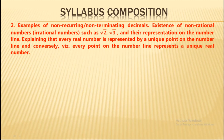Next we will learn about the existence of irrational numbers — non-rational numbers such as √2 and √3 — and their representation on the number line. This is a new concept; in previous classes we handled rational number representation, but here we represent irrational numbers on the number line.